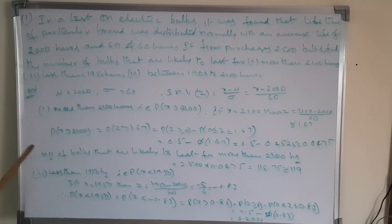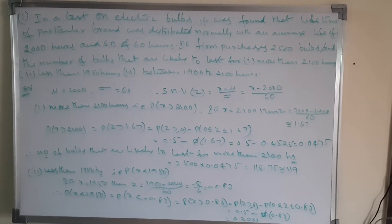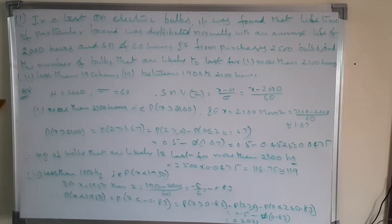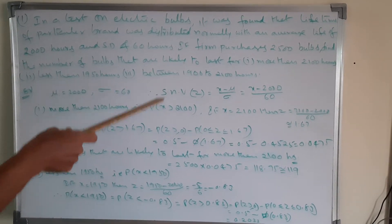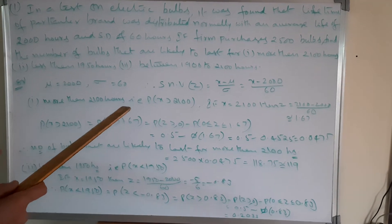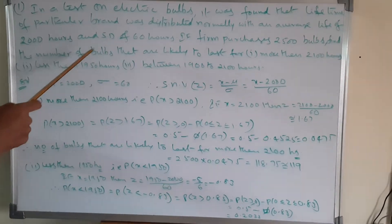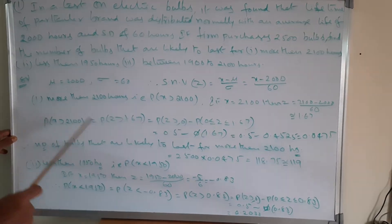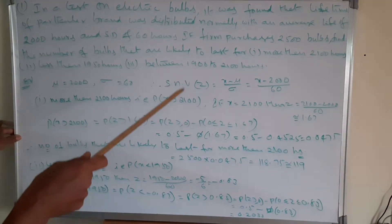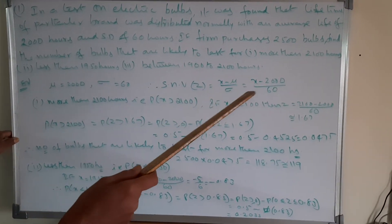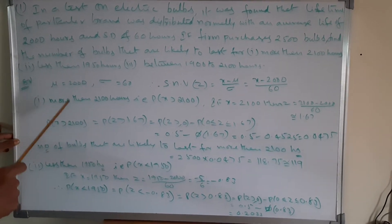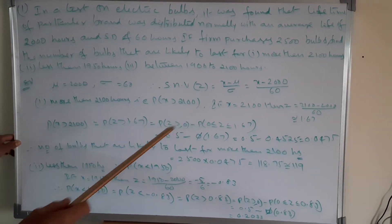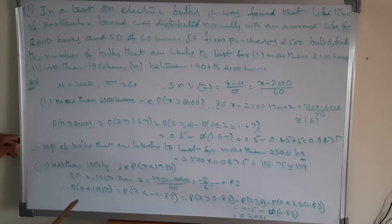These are the normal distribution problems. The first problem: in a test on electric bulbs, it was found that the lifetime of a particular brand was distributed normally with an average lifetime of 2000 hours and standard deviation of 60 hours. If a firm purchases 2500 bulbs, find the number of bulbs likely to last for more than 2100 hours, less than 1950 hours, and between 1900 to 2100 hours.